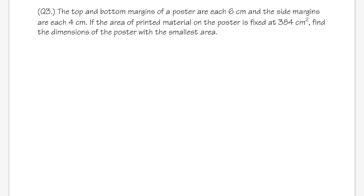Number three: the top and bottom margins of a poster are 6 cm each, and the side margins are 4 cm each. The area of the printed material inside is fixed at 384 cm². We want to find the dimensions of the poster that give the smallest total area. Let's draw the picture and label the printed area dimensions x (horizontal) and y (vertical).